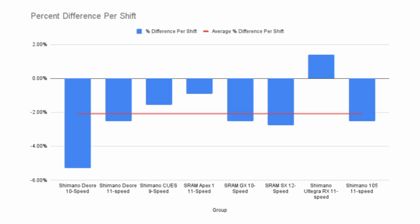This pattern holds up among nearly all of the groups that I've tested. I'm still working on measuring more components, so some groups may not work this way. However, this trend of shifting slightly less than the cog pitch shows up whether you're looking at Shimano or SRAM, and whether you're looking at mountain or road components. The only exception to this pattern that I've discovered appears to be the Shimano Ultegra RX group, composed of the ST-R8020 shifter, RD-RX800 derailleur, and an 11-speed cassette. I don't have a theory for this, but I hope to learn more in the future.